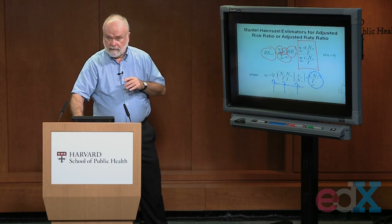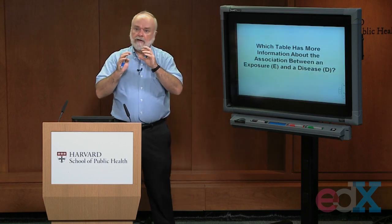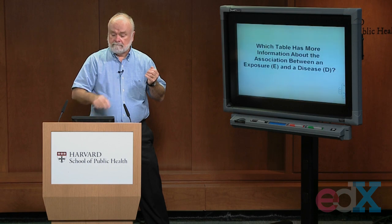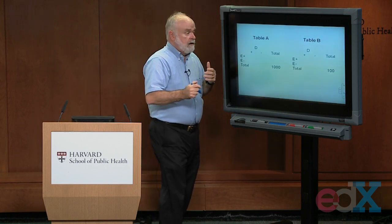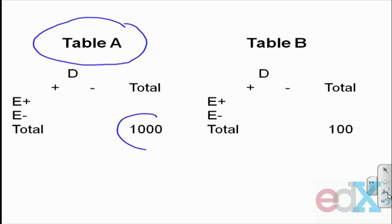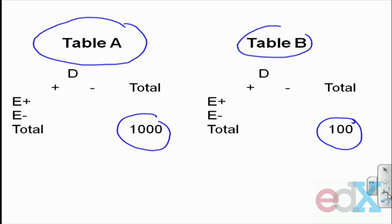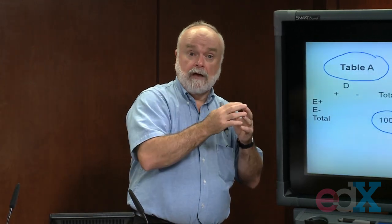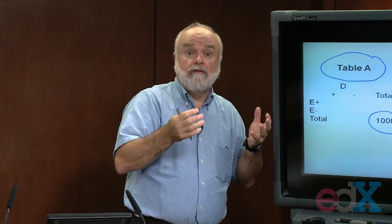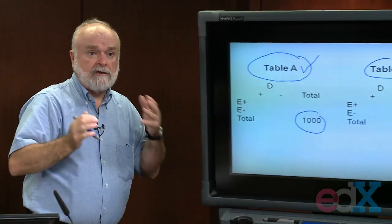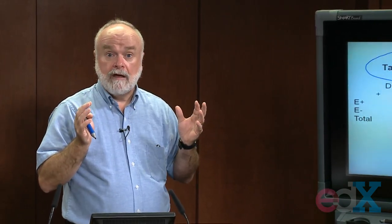Let me ask you some questions. Suppose you had a choice of either having table A, which has 1,000 people total, or table B, which only has 100 people. Which table would have more information to measure the association between exposure and disease, say calculating a risk ratio? The more people I have, the more information I have. So I'd prefer table A over table B — the table with the bigger value for T, the total number of people. Table A has more people, more information.